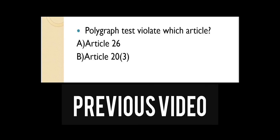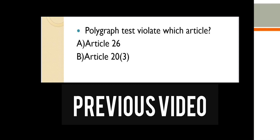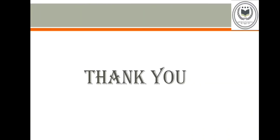In the previously uploaded video, the topic was the polygraph test or lie detection test. The question asked was: the polygraph test violated which article? The correct answer is B — Article 20, subsection 3. We have also given the answer in the description. Thank you everyone for watching this presentation. If you have any queries related to this topic, feel free to write in the comment section.